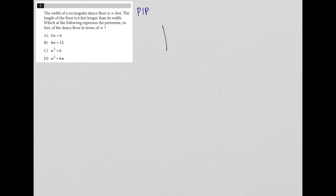So I've been told that I have a rectangular dance floor. So I'm going to draw my rectangle. And I'm told that the width is W. So I'm just going to label that with W.